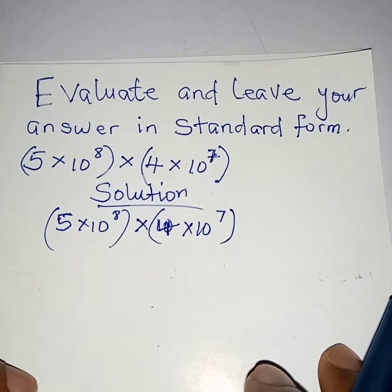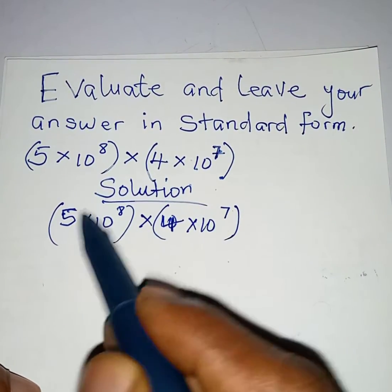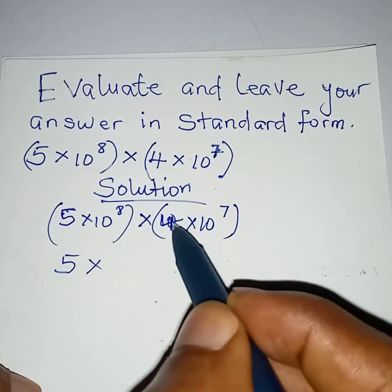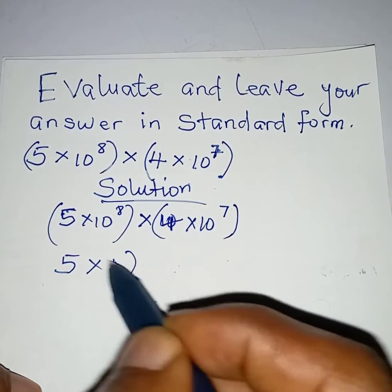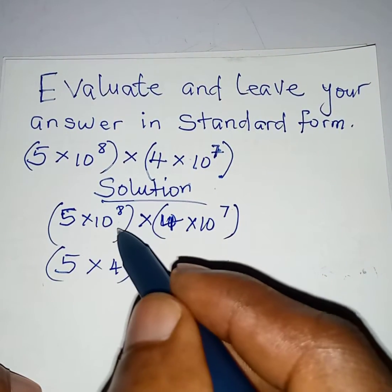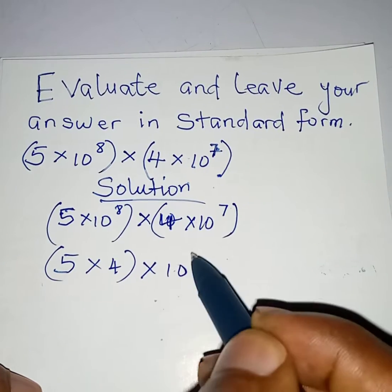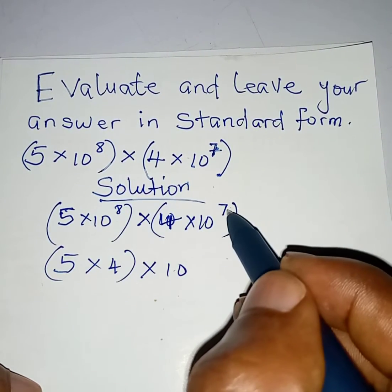So this is what we should do. First of all we will have 5 multiply by 4. Let's have this in a bracket and then we will pick times 10 raised to the power of 8 plus 7.